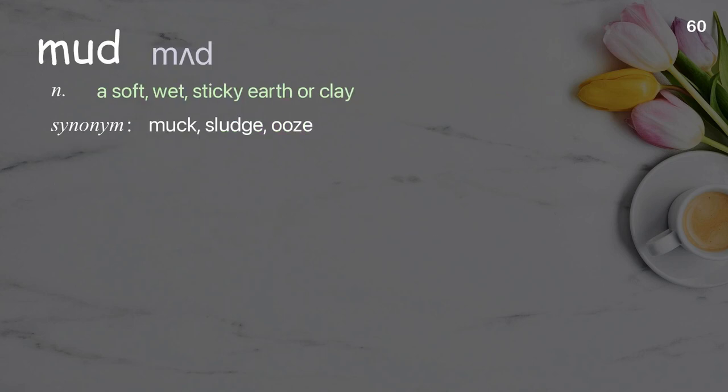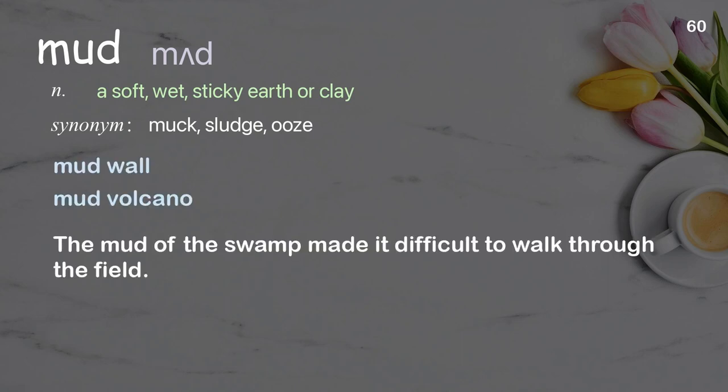Mud: a soft, wet, sticky earth or clay. Examples: mud wall; mud volcano. The mud of the swamp made it difficult to walk through the field.